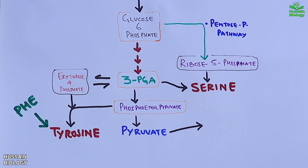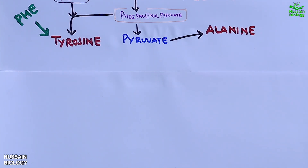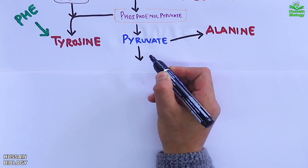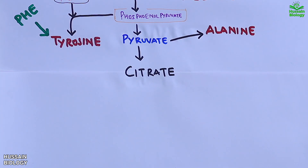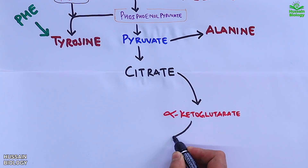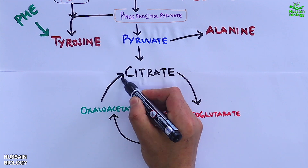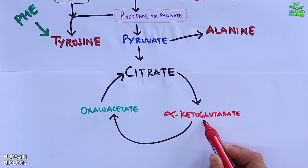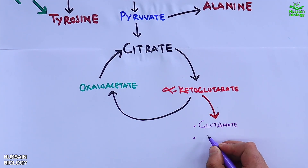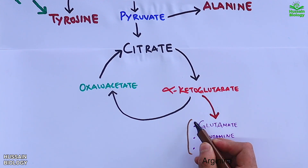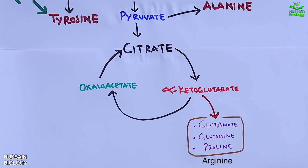In the last step, phosphoenolpyruvate is converted into pyruvate, which is the final step of glycolysis. This pyruvate molecule drives the synthesis of alanine. From here, pyruvate enters the citric acid cycle, where it is converted into citrate and other intermediates including alpha-ketoglutarate and oxaloacetate. From alpha-ketoglutarate we get the synthesis of glutamate, glutamine, proline, and arginine, and from oxaloacetate we get the synthesis of aspartate and asparagine.